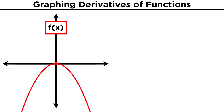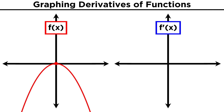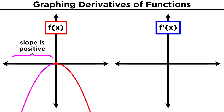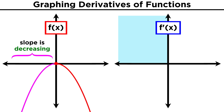Let's say we have a parabola that opens downwards with its vertex at the origin. Without knowing the equation and without doing any algebra, let's use our understanding of derivatives to make a rough sketch of the derivative. Going from negative infinity to zero, this function is always increasing. All of the values of the function are negative, but that doesn't matter — we are looking at the rate of change of the function. The function is always increasing, which means a positive rate of change, so the derivative must be positive over this entire interval.